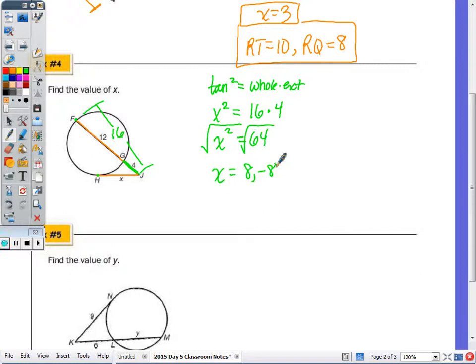Since I took the square root, to undo the square, I have two solutions, both the positive and negative. And I'm going to reject the negative 8, as the length of a segment can never be, or will never be negative.